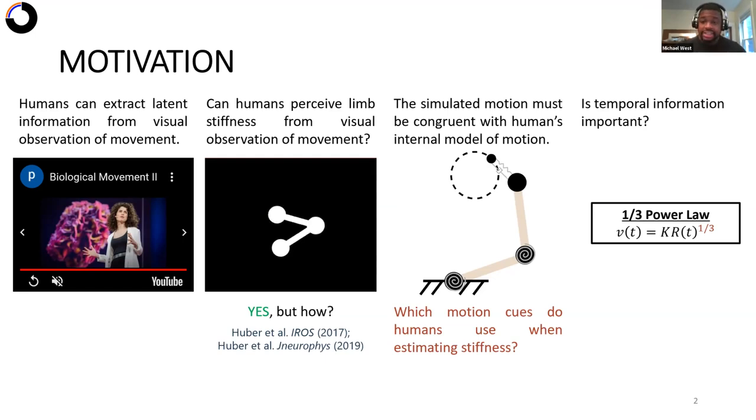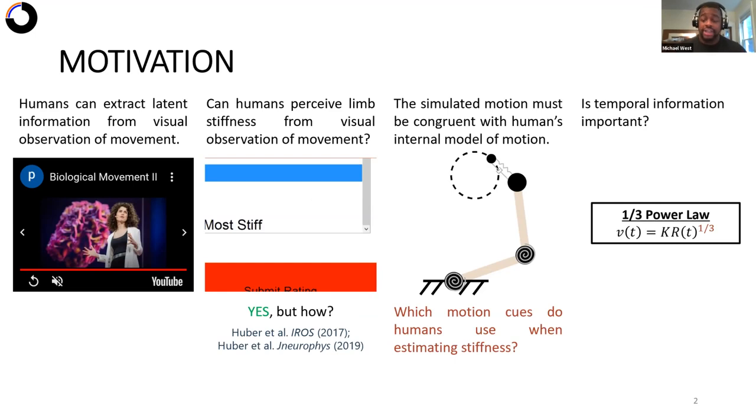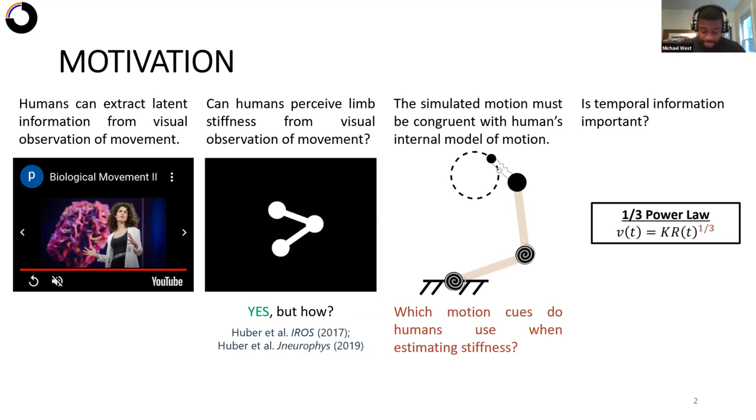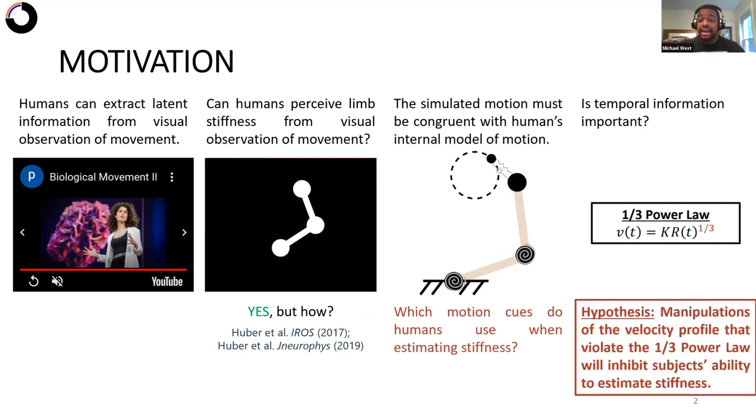which is basically a mathematical relationship of the velocity profile during upper limb reaching. And we hypothesize that in our previous experiments, our simulations typically did follow this power law. So we hypothesize, based off of this literature, that manipulations of the velocity profile that violate this one-third power law will inhibit subjects' ability to estimate stiffness.